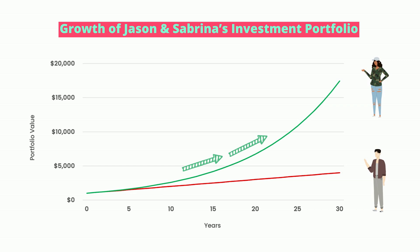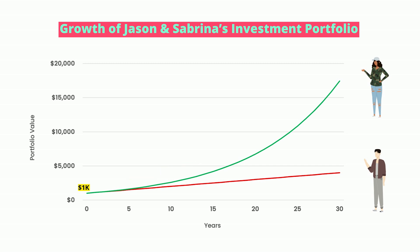Her investments grow exponentially as the interest keeps piling up. The more interest she earns, the faster her investment grows. For example, while it takes approximately nine years for her initial $1,000 investment to surpass the $2,000 mark, it takes only four years to grow from $2,000 to $3,000, and three years to grow from $3,000 to $4,000. The momentum keeps building and her wealth accumulates faster and faster. Jason, on the other hand, doesn't experience the same snowball effect — his money grows linearly, meaning it takes the same amount of time to go from $1,000 to $2,000 as it does from $2,000 to $3,000.